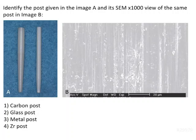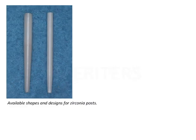Identify the post given in image A and its SEM 100x and 1000x view with the same post in image B. This is a zirconia post and its SEM view is given here. The zirconia post has a smooth surface — it has no grooves and no serrations. This image given here is a zirconia post, so the answer is zirconia post.